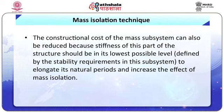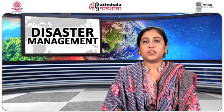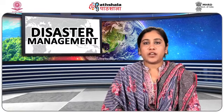The constructional cost of the mass subsystem can also be reduced because the stiffness of this part should be at its lowest possible level — defined by stability requirements — to elongate its natural period and increase the effect of mass isolation. This results in smaller cross sections and simpler structural connections due to reduced rigidity requirements in joints. Retrofit of a structure can be considered a potential application of mass isolation by separating the lateral load mechanism of the existing structure from the remaining part of the system, or by adding a new lateral resisting system. Compared to other retrofitting options, this technique might be justifiable in tall structures.